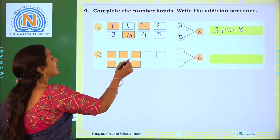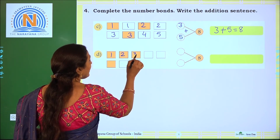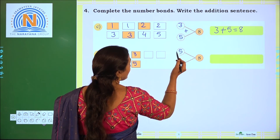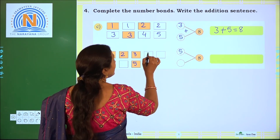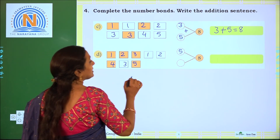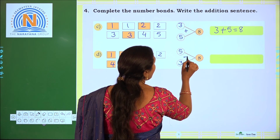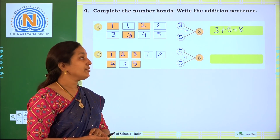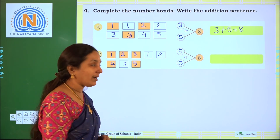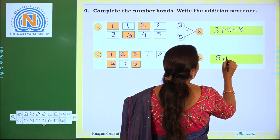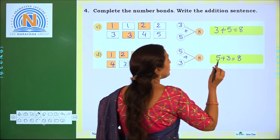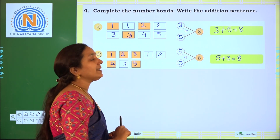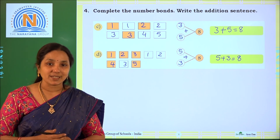Next one: see how many are colored — 1, 2, 3, 4, 5. So 5 colored boxes. How many are not colored? 1, 2, 3. Not colored boxes are 3. While adding 5 and 3, 5 and 3 make 8. So 5 plus 3 equal to 8. The addition sentence is 5 plus 3 equal to 8. You can observe that whether we add 3 and 5 or 5 and 3, we get totally 8 objects. Once again practice all sums. Thank you.